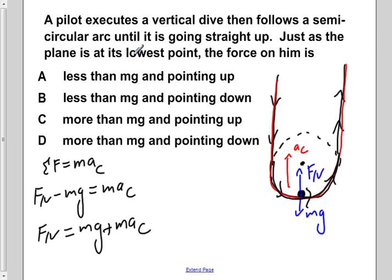So when our pilot is at its lowest point, the force on him is more than mg, so Fn is equal to mg plus ma centripetal, so we know it's greater. And the normal force is directed upward, so our answer is C, more than mg and pointing up.